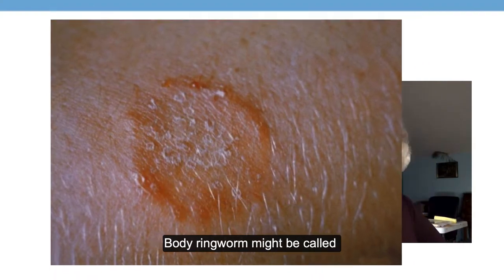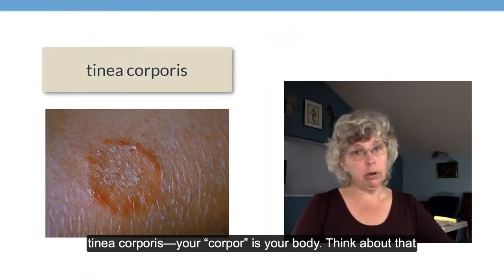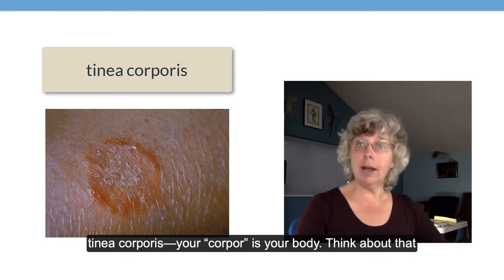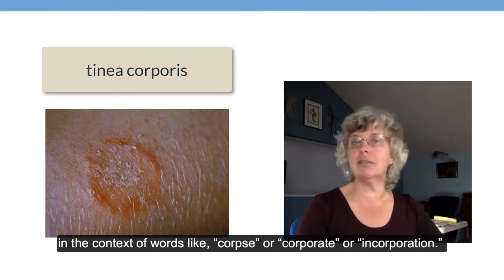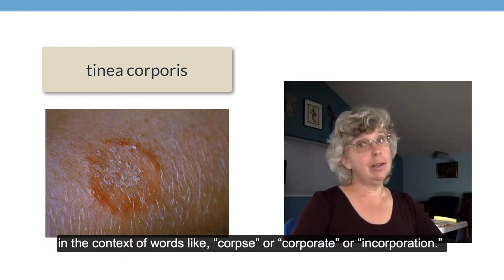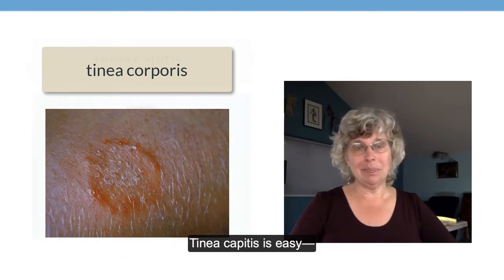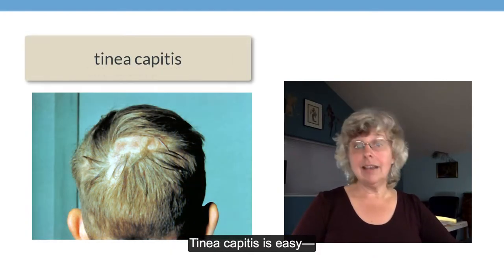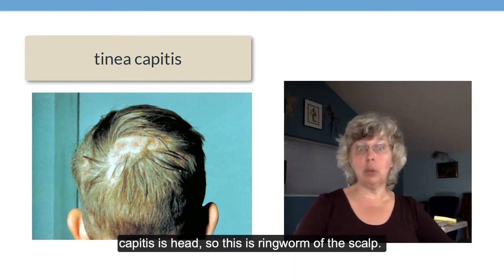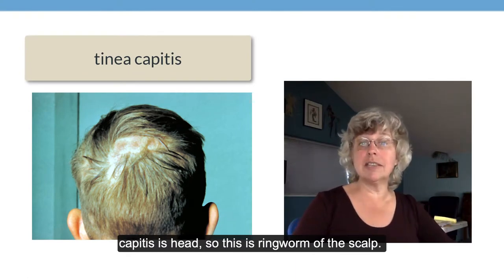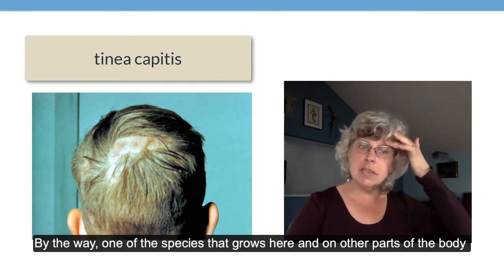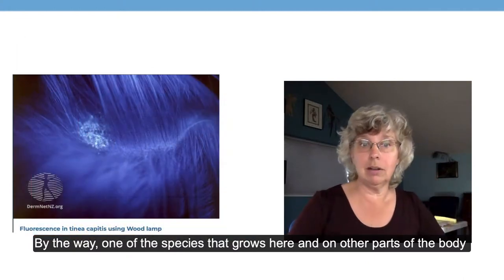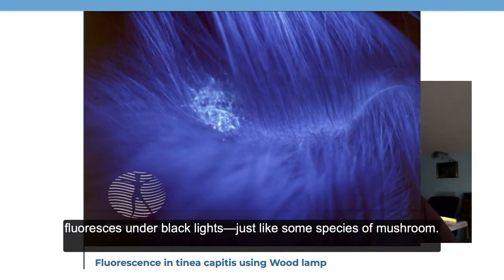Body ringworm might be called tinea corporis. Corporis is your body — think about that in the context of words like corpse, or corporate, or incorporation. Tinea capitis is easy: capitis is head, so this is ringworm of the scalp. By the way, one of the species that grows here and on other parts of the body fluoresces under black lights, just like some species of mushroom.